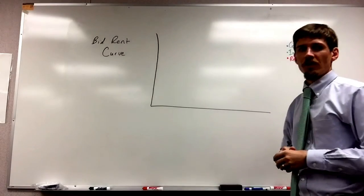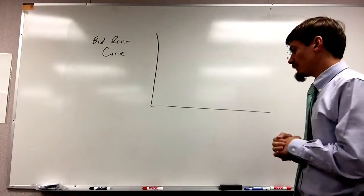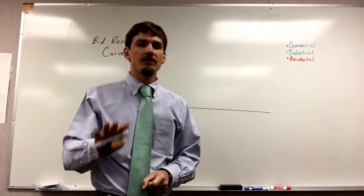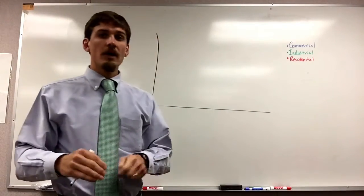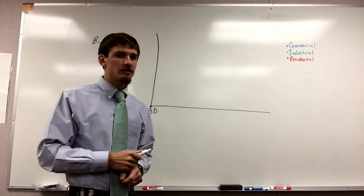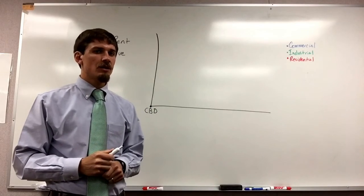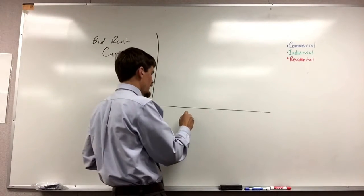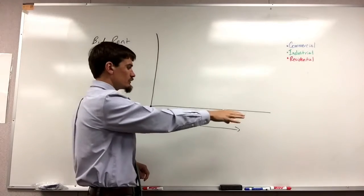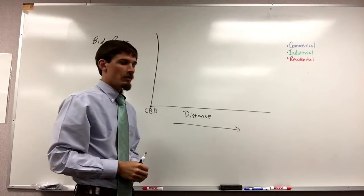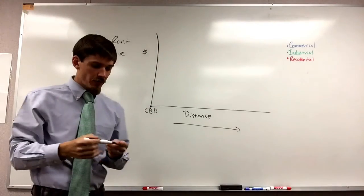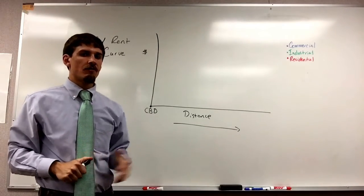Here we have a normal graph with horizontal and vertical axes. On this graph we're going to label it in a couple of different parts. We're talking about activities near the urban center — in urban geography we call this the central business district, abbreviated as CBD. Our horizontal axis represents distance from the urban center, and our vertical axis represents the cost of land as it relates to distance from the CBD.